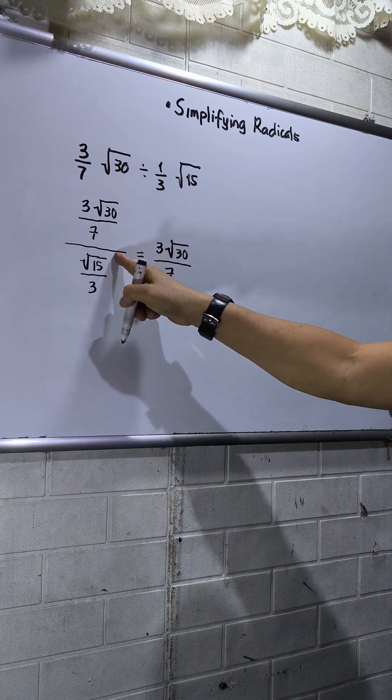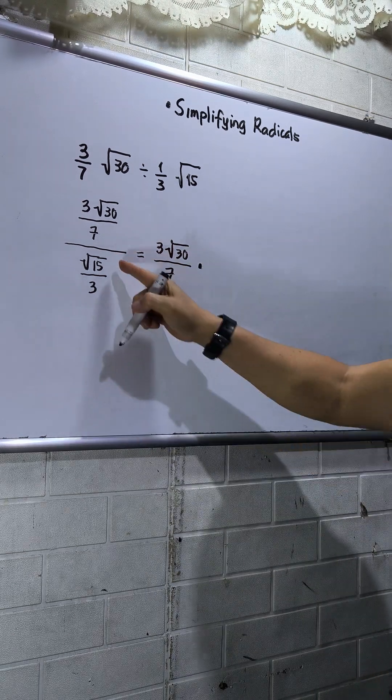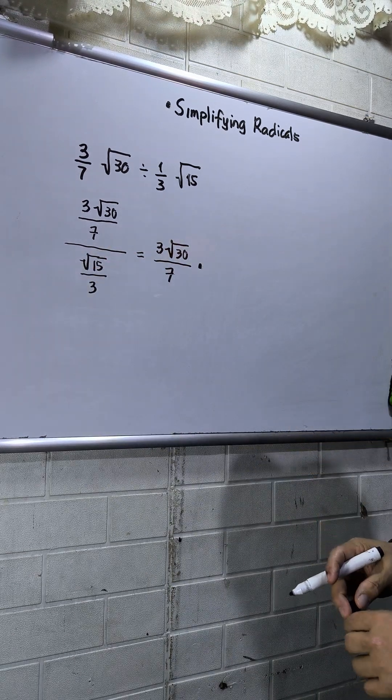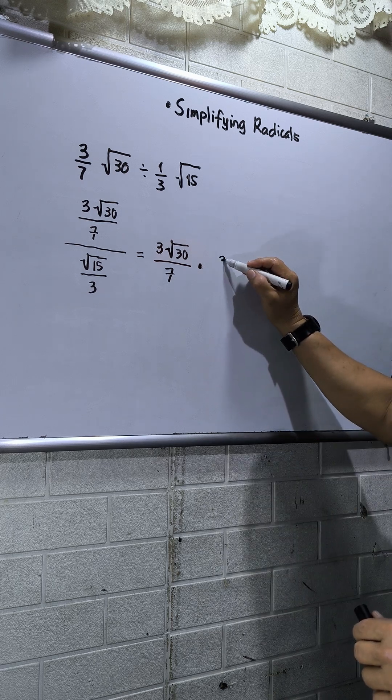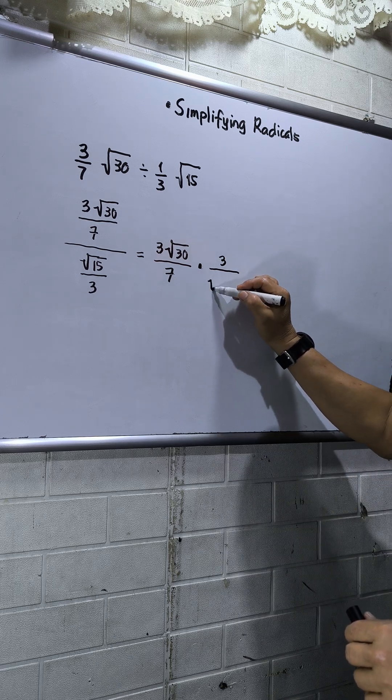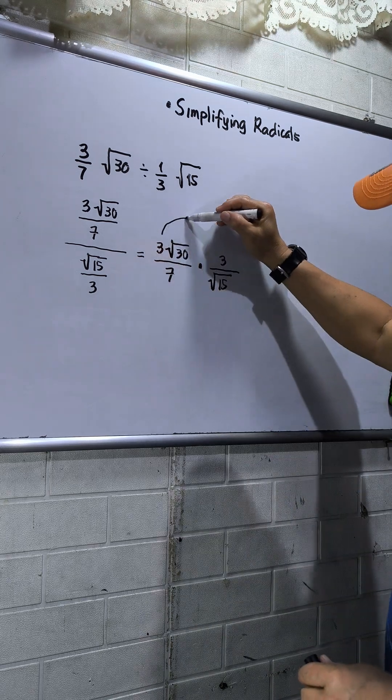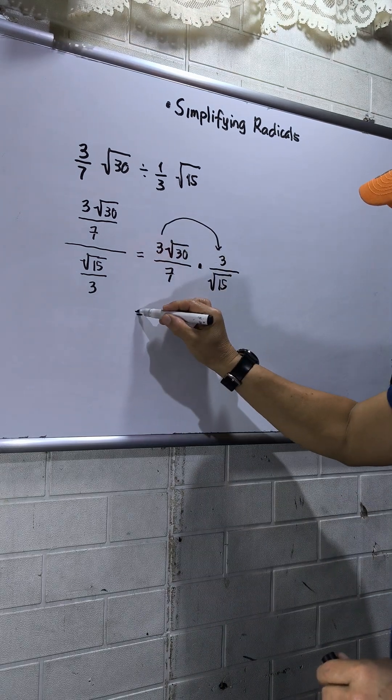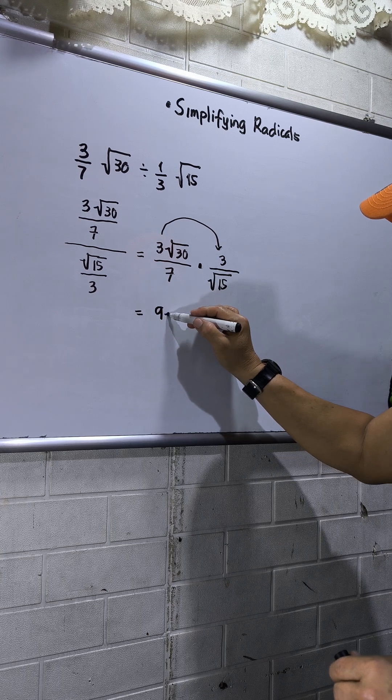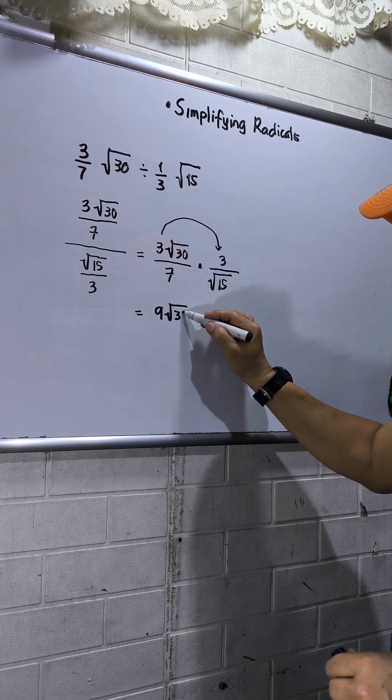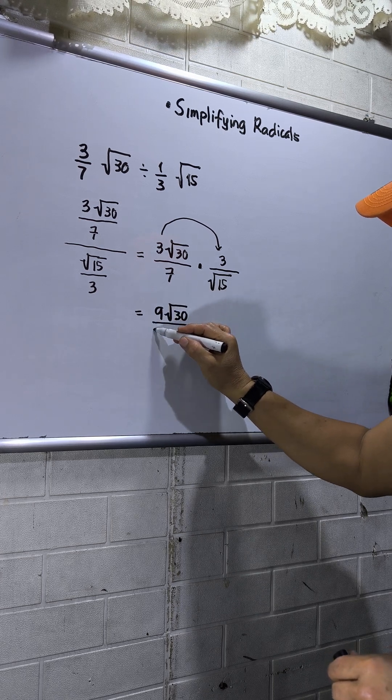Then I will change this operation to multiplication and take the upside down of the denominator. So this will be 3 over square root of 15. So multiply, this will be 9 square root of 30, then this will be over 7 square root of 15.